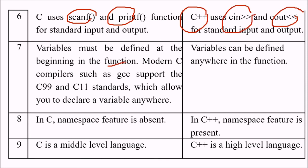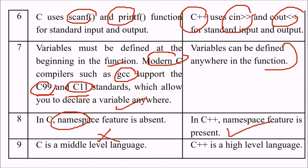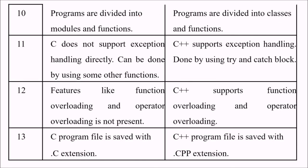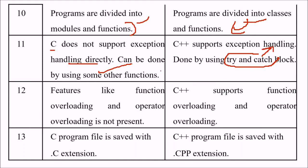Variables must be defined at the beginning of a function in C, but modern C compilers like GCC support the C99 and C11 standards, which allow you to declare variables anywhere. In C, namespaces are absent; in C++ you have namespaces. C is a middle-level language, C++ is a high-level language. Programs in C are divided into modules or functions, while in C++ programs are divided into classes with functions inside them. C does not support exception handling directly, but C++ has try-catch blocks. Function overloading and operator overloading are not present in C, but are present in C++. The default extensions are .c and .cpp respectively. Thank you — this was about the differences between C and C++.